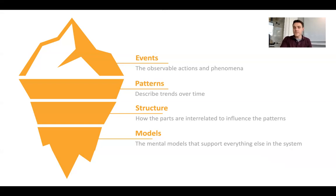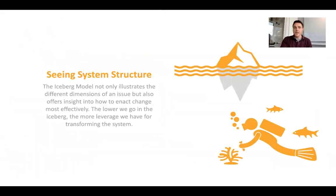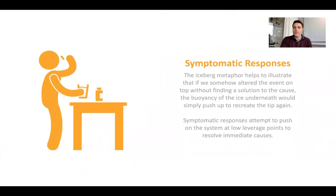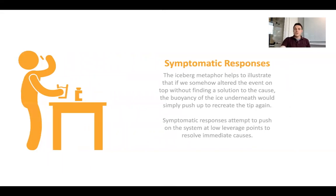So that's the iceberg model — it helps us think about interventions on different levels. It's all about seeing system structure, the stuff going on beneath the waterline. And it moves us away from this symptomatic response, which is a lot of what we do — that's what happens at the top of the iceberg. When we respond there to the events, we're taking symptomatic approaches, and a lot of what we do doesn't lead to any long-term changes.